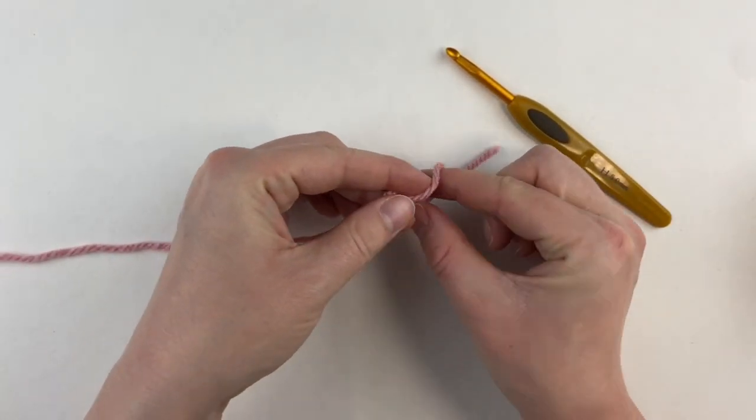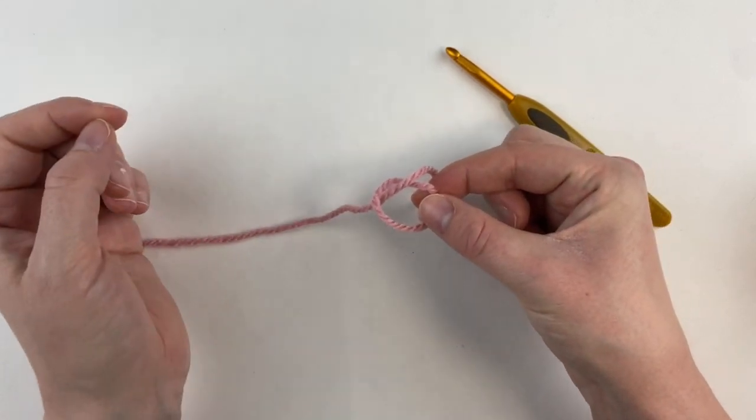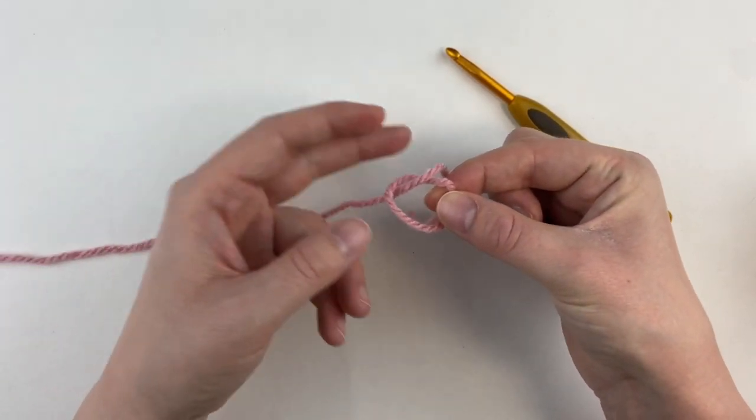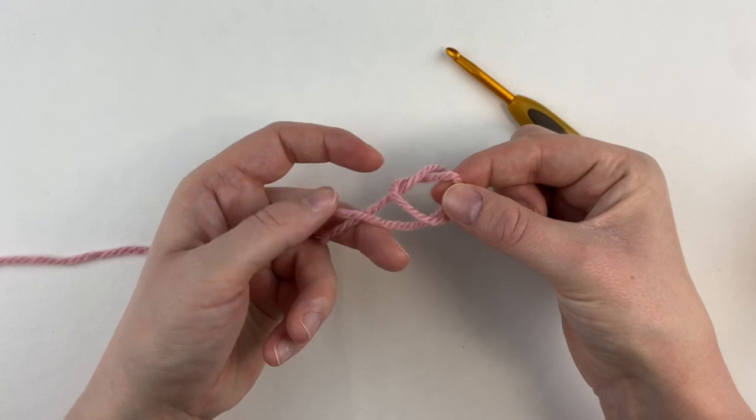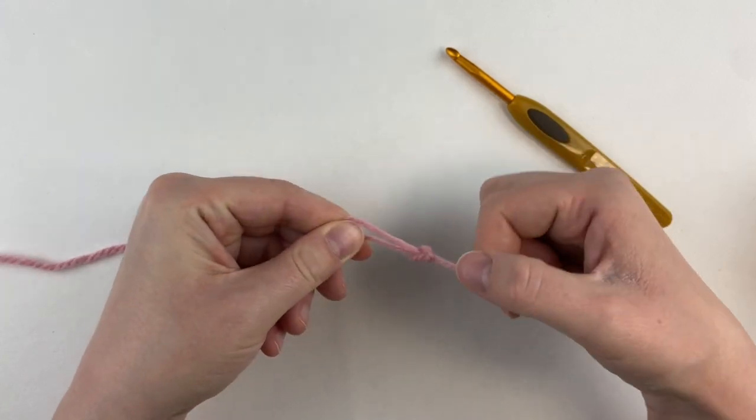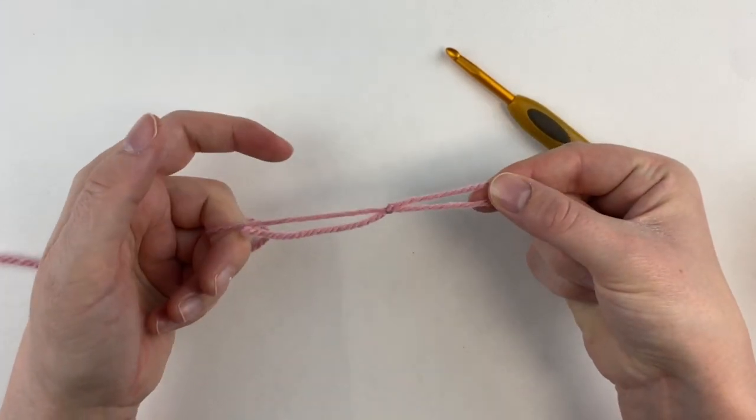I tend to grab the shorter tail, provided that it's long enough. Pull it through that loop, but obviously leaving that other tail out of the way and pull. There again you have your slipknot.